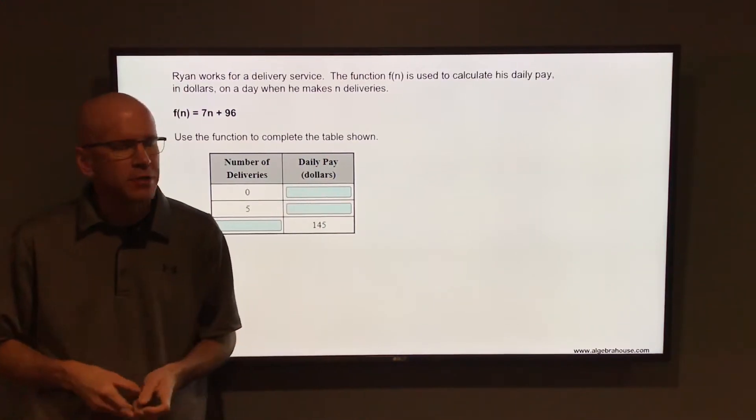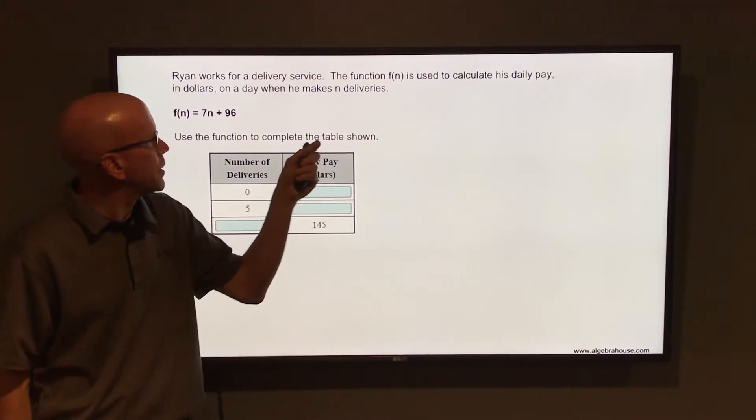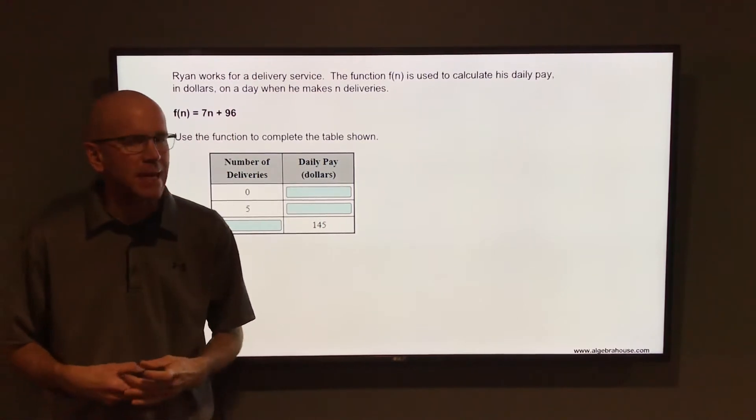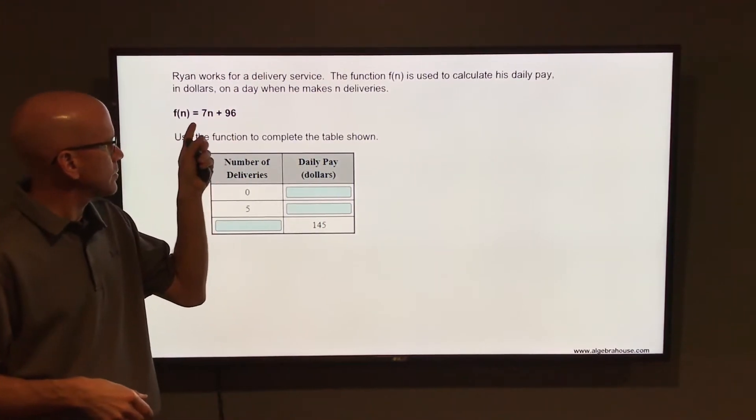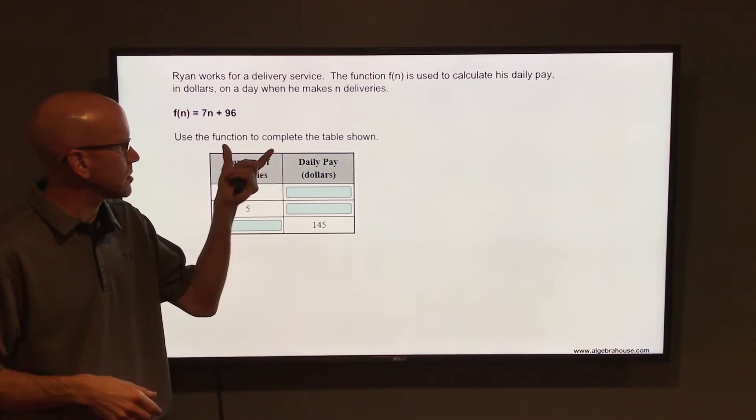Ryan works for a delivery service. The function f(n) is used to calculate his daily pay in dollars on a day when he makes n deliveries. f(n) = 7n + 96. Use the function to complete the table shown.